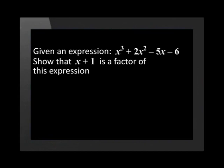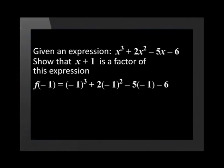Given the expression x cubed plus 2x squared minus 5x minus 6, show that x plus 1 is a factor of this expression. According to the Factor Theorem, if x plus 1 is a factor, then substituting x equals negative 1 into the expression should give an answer of 0. f of negative 1 equals negative 1 cubed plus 2 multiplied by negative 1 squared minus 5 multiplied by negative 1 minus 6. This gives us 0.